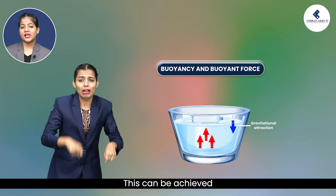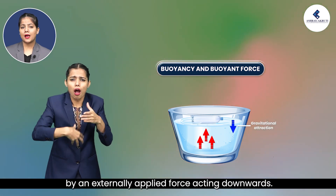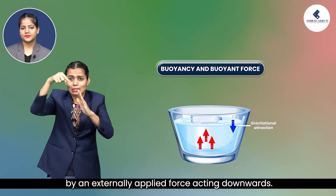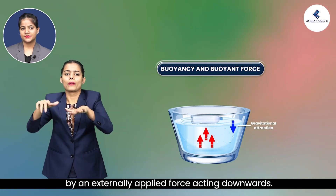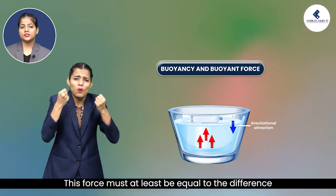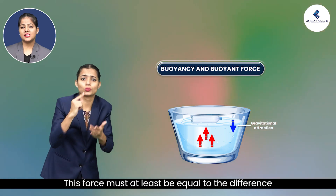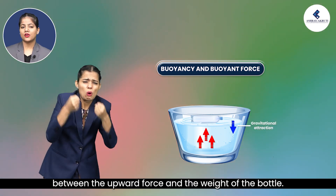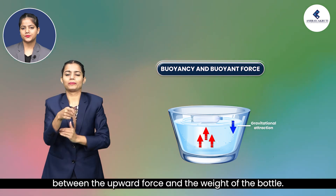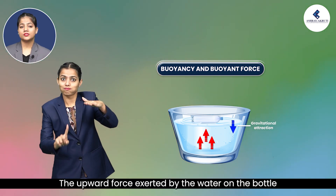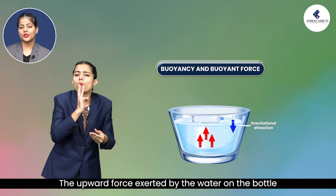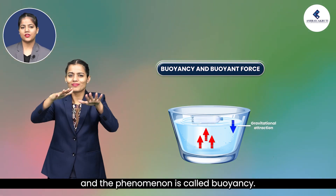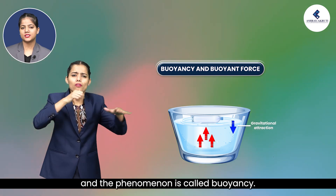This can be achieved by an externally applied force acting downwards. This force must at least be equal to the difference between the upward force and the weight of the bottle. The upward force exerted by the water on the bottle is known as upthrust or buoyant force, and the phenomenon is called buoyancy.